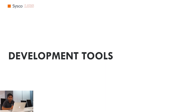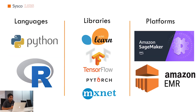Now let's look at development tools. Using development tools, we can apply all machine learning techniques. In machine learning, we mainly use Python and R. We have libraries like scikit-learn, TensorFlow, and PyTorch, which contain all the models we need. We also have MXNet, which is a deep learning framework. When it comes to platforms, tools like Amazon SageMaker and Amazon EMR have all these resources and allow us to do large-scale machine learning projects, quickly training models on large datasets. That concludes our session — thank you very much.